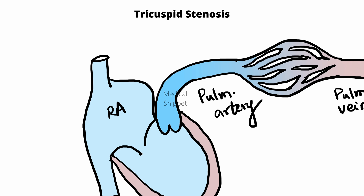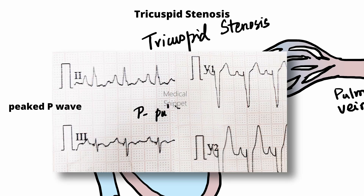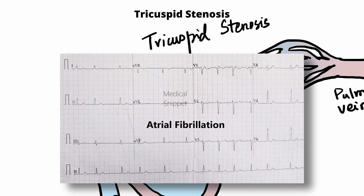In tricuspid stenosis, there is right atrial hypertrophy. In ECG, it is seen as a peaked P wave called P pulmonale. P pulmonale is defined as a P wave more than 2.5 mm in height in inferior leads 2, 3, and aVF, or more than 1.5 mm in height in leads V1 and V2. In 50% of patients, atrial fibrillation develops and P pulmonale disappears.